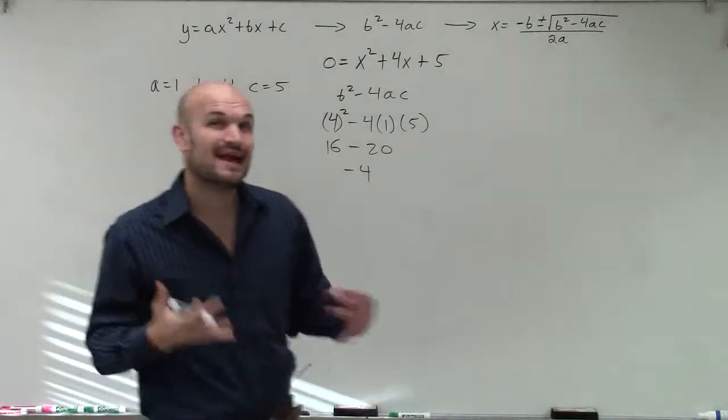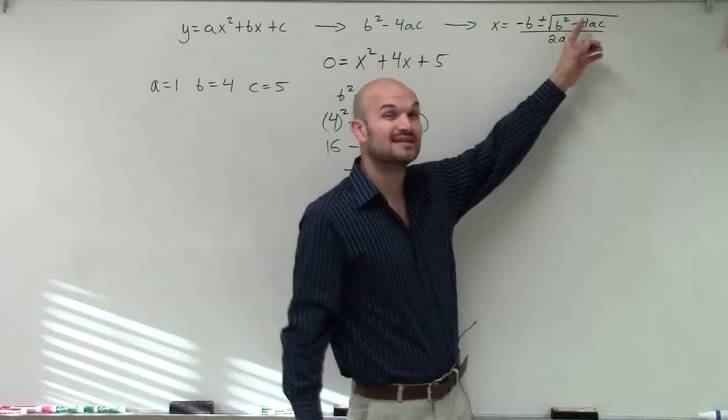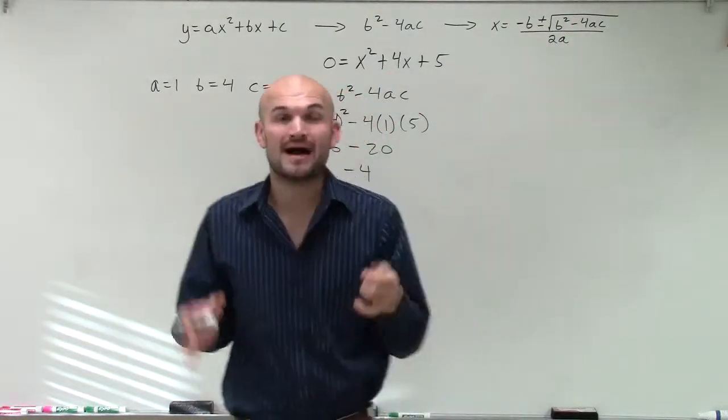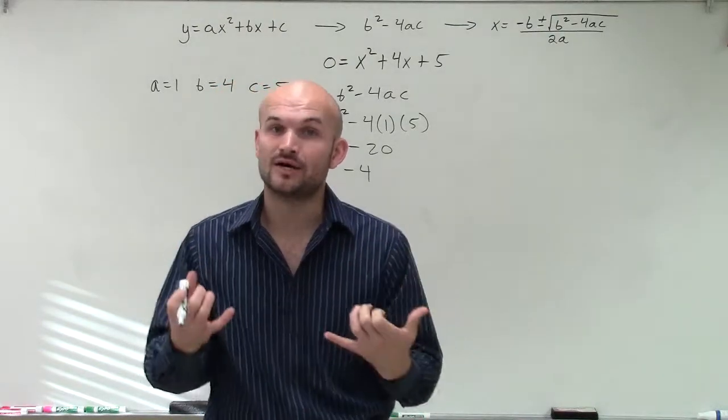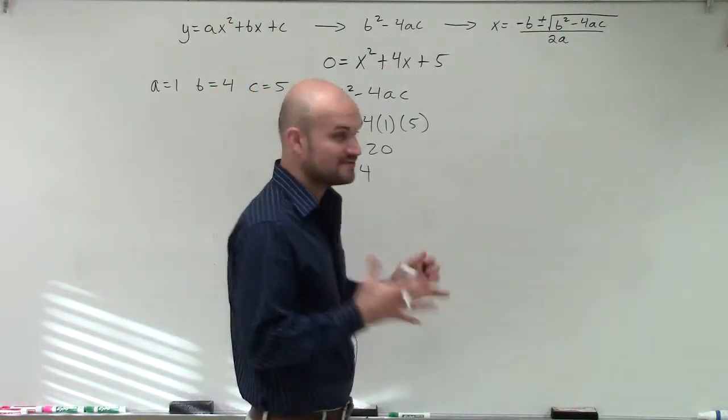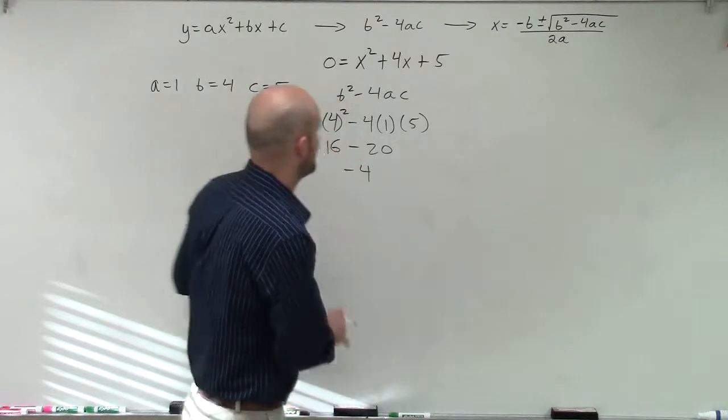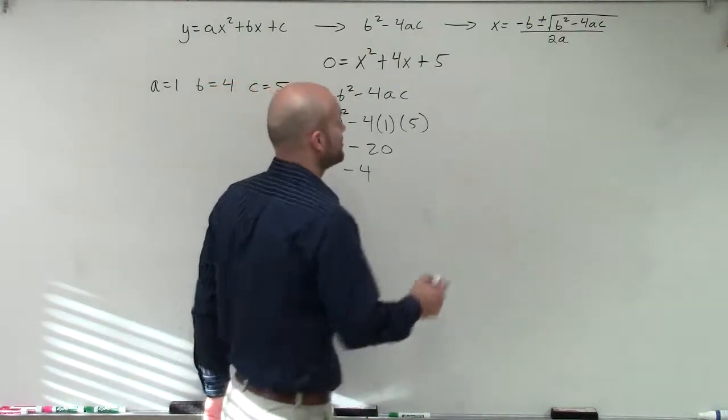Therefore, since I have a negative number, remember that negative number is going to be under my square root, I automatically now know that my solutions are going to be imaginary, meaning I'm not going to actually have any real x-intercepts. But that's very helpful, and we'll still go ahead and evaluate to find the exact values, if they're imaginary or complex.